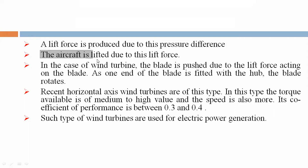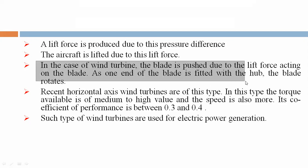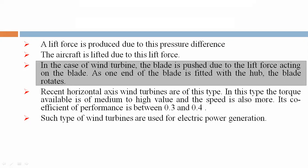The aircraft is lifted due to this lift force. In the case of a wind turbine, the blade is pushed due to the lift force acting on the blade. As one end of the blade is fitted with the hub, the blade rotates.